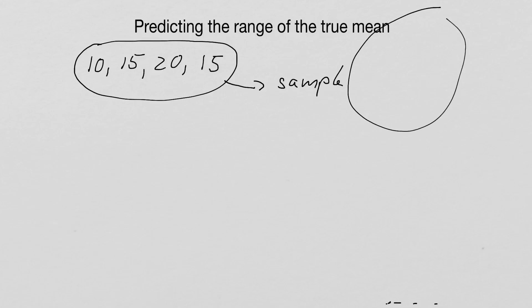So what we do now is we treat our measurements as a sample of a far bigger, large population. And this large population would be all the experiments that could be done under these conditions. What we do in the first place is we try to calculate the mean of our sample.